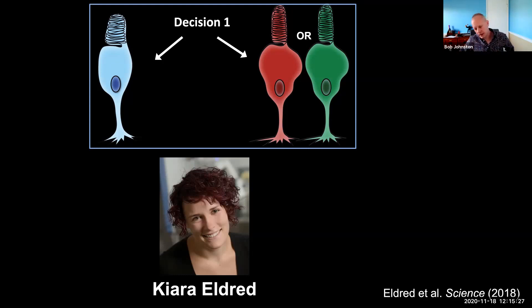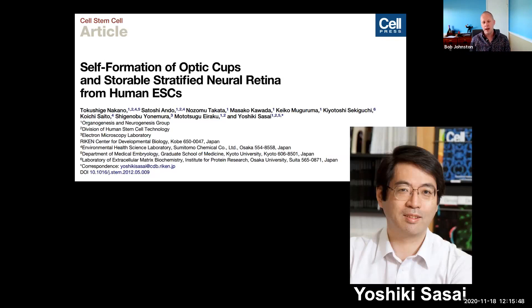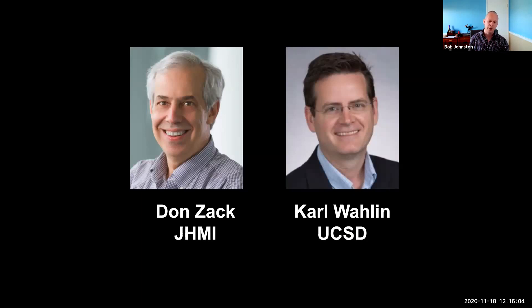I'm very grateful to Kiara because she was the first member of my lab to step out from flies and start this organoid work. When I started my lab, I was really inspired by a talk in 2012 by a fantastic scientist named Yoshiki Sasai, who had developed a system originally in mouse and then later applied in humans to take stem cells and differentiate them into human retinal tissue. I thought, what a fantastic system to study how cells in the human eye are made. I have to thank Don, Zach, and Carl Whalen, collaborators at JHMI, who helped me get this system up and running in my lab.